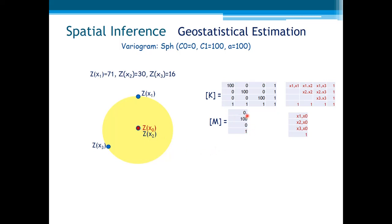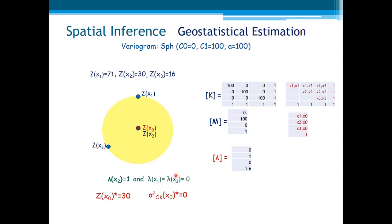And this is zero for the other two cases. The resulting weights are: one for the sample value at that location, and zero for the others. So the resulting estimate is exactly the same as the value zx2. And the Kriging variance is zero. The estimated value is exactly the value of the sample, and this is called the exactitude property of Kriging.